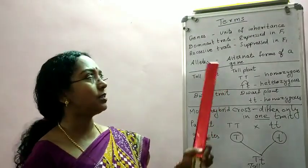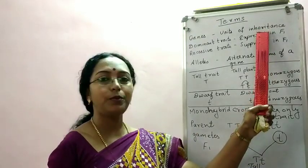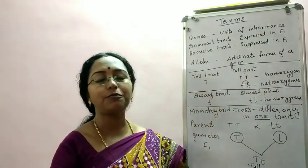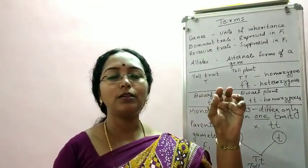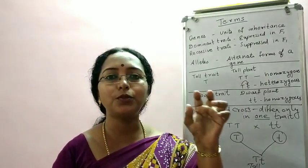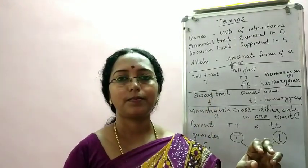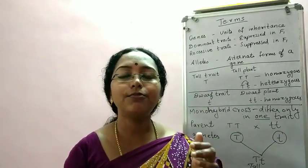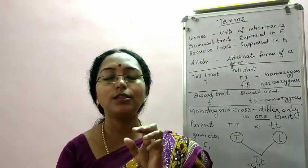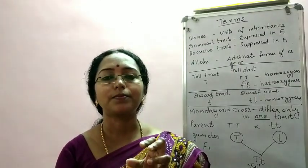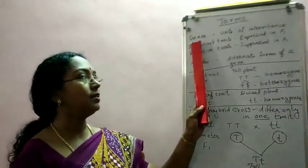So what are genes? They are units of inheritance. The term inheritance — the process of passing on characters from parents to progeny. So in that process of passing on characters from parent to progeny, there are some units which are getting passed on. Those units are found in gametes, and they are passed on from parents to progeny — they are the genes.